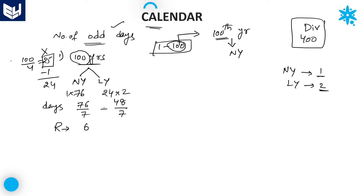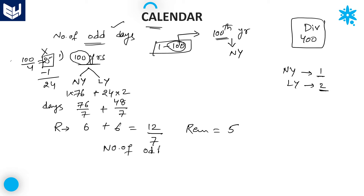Since 12 exceeds 7, divide 12 by 7 again. The remainder is 5. Therefore, the number of odd days in 100 years is equal to 5.